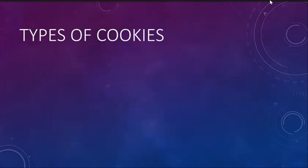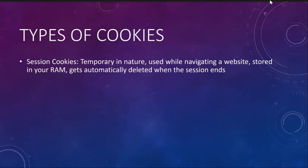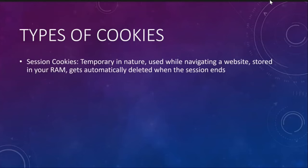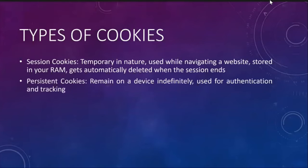Moving to types of cookies. Session cookies are temporary in nature. They're used while navigating a website, stored in your RAM, and automatically deleted when the session ends — the moment you close the browser, that information gets deleted. These are things like when you're on Amazon browsing shoes, looking at various options, pressing the back button to go to previous pages within the same website — that comes from session cookies. But the moment you close the browser, you can't go back to that anymore. It might be in your history, but that depends on persistent cookies.